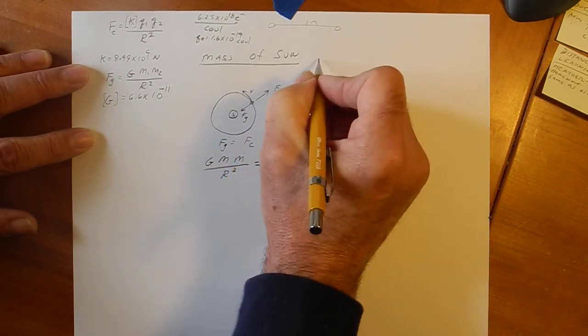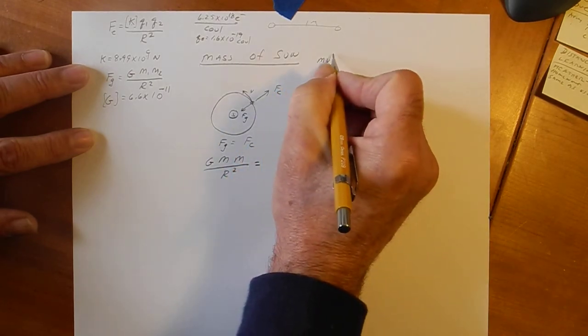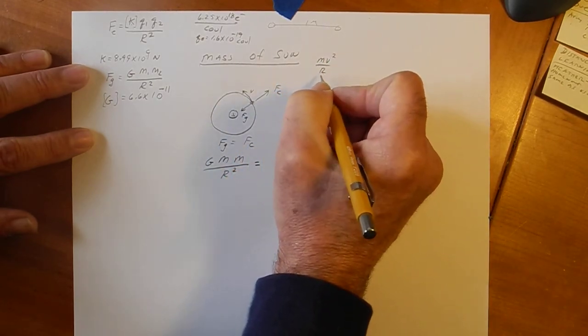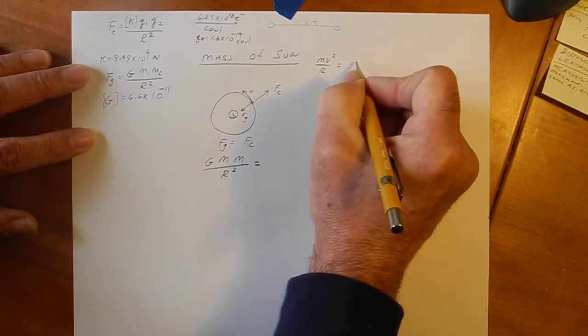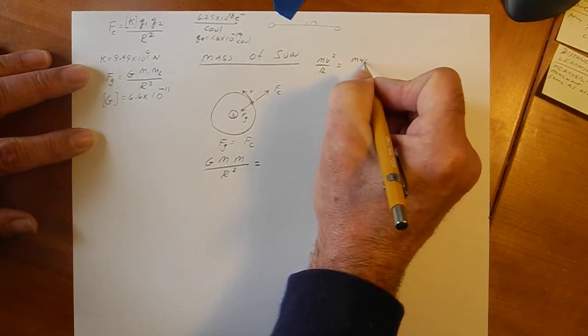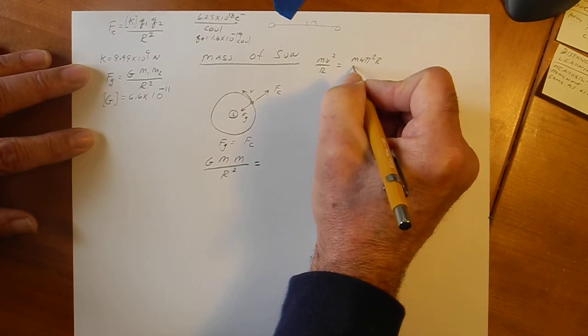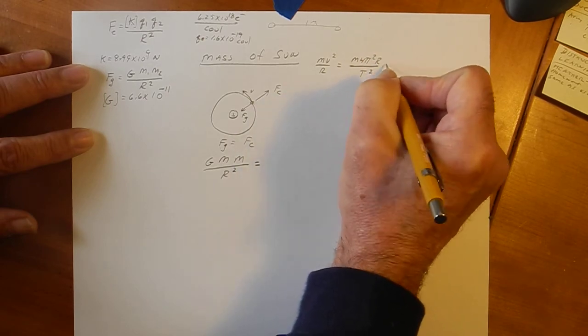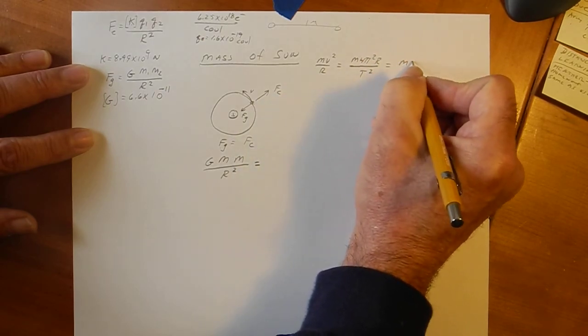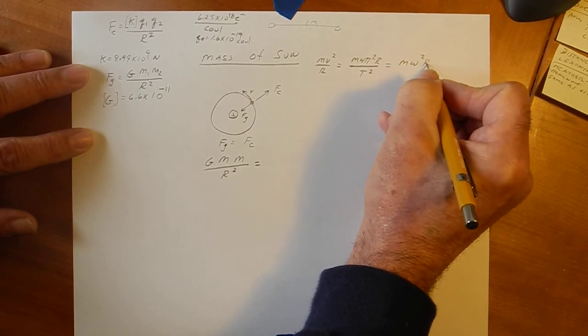Well, we have Mv squared over R is a choice. We have M4 pi squared R over T squared is a choice. And we have M omega squared R is a choice. We can use any of these if we know the numbers.